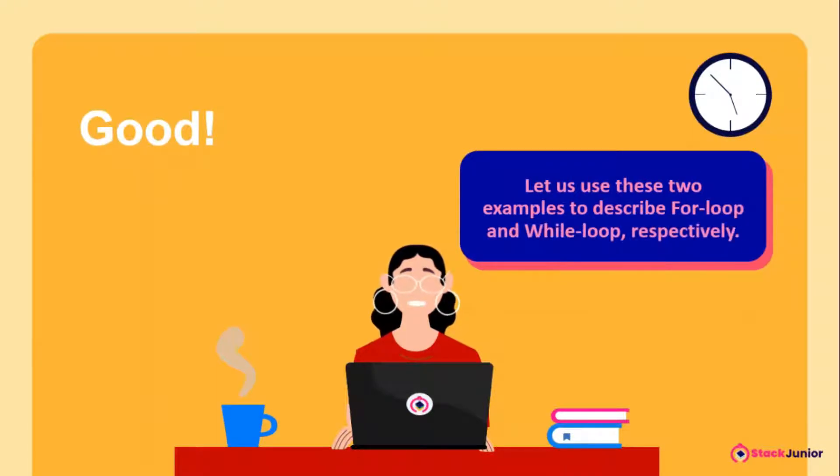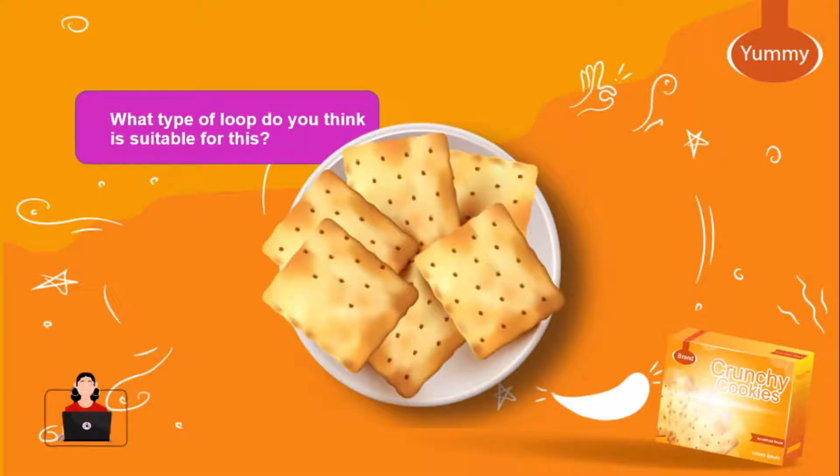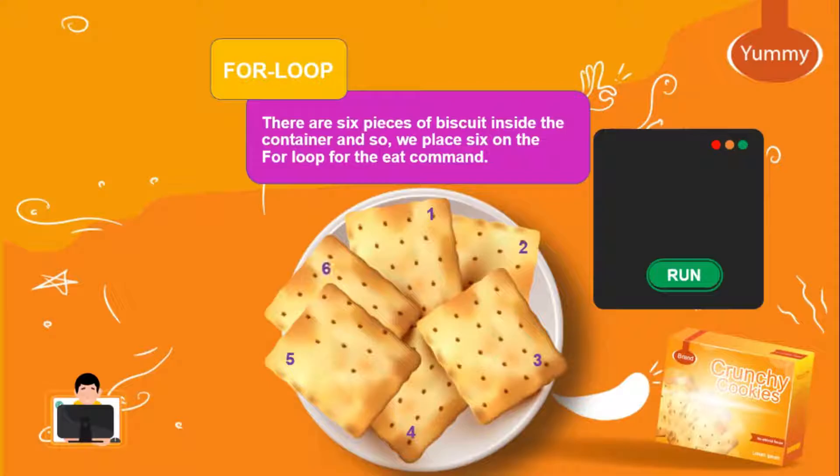I just bought a biscuit and realized that there are six pieces of biscuits inside its container. Now I want to eat all the biscuits and I want to place the eating command in a loop. What type of loop do you think is suitable for this? It's for loop.